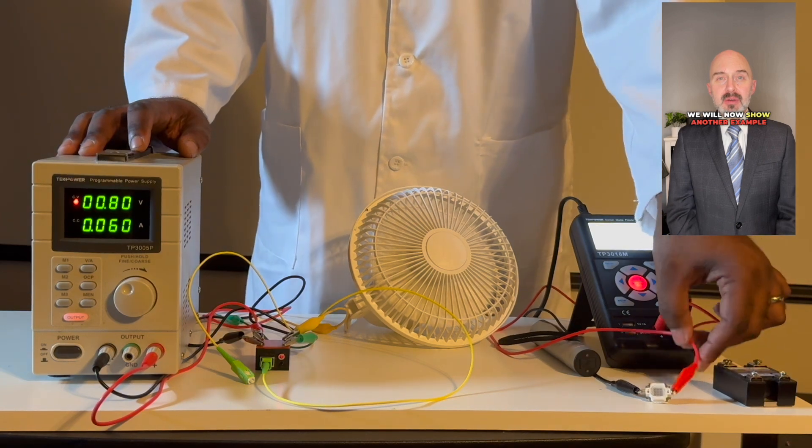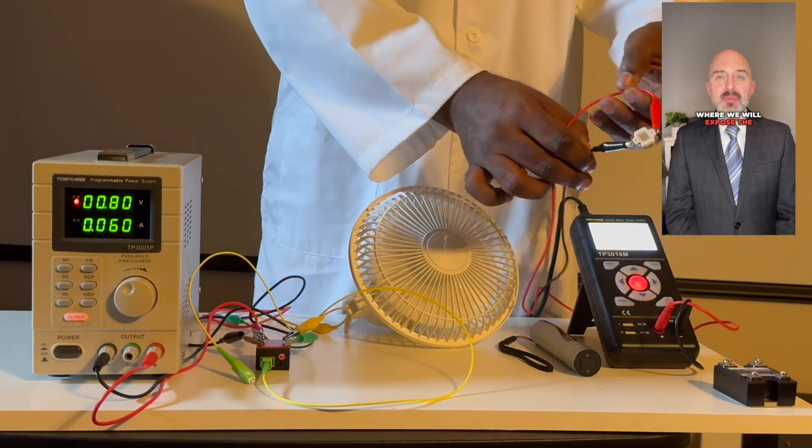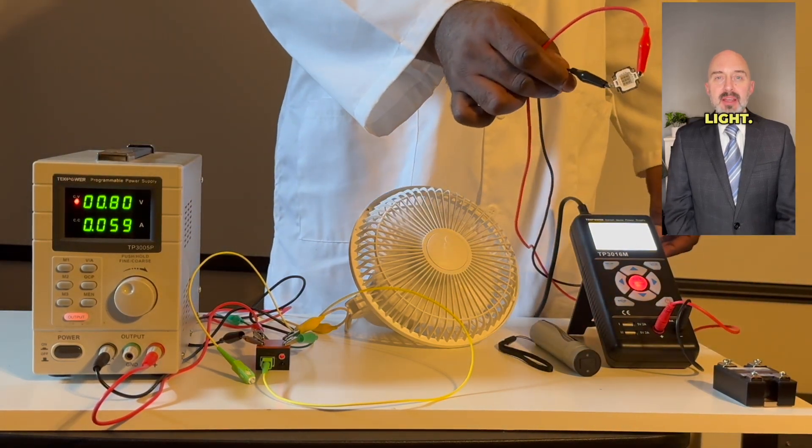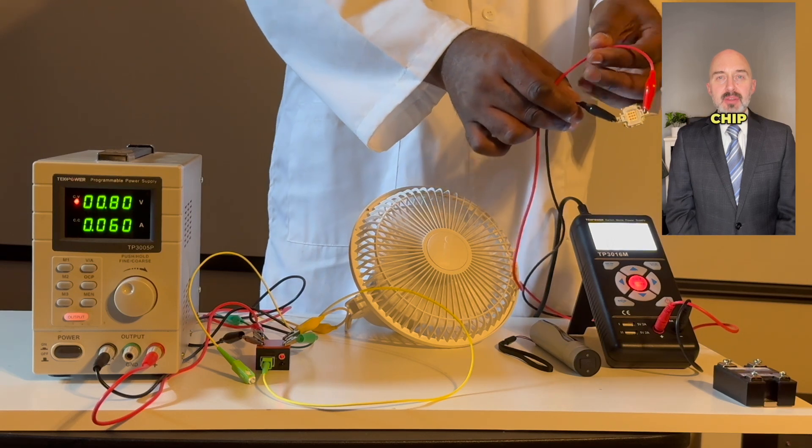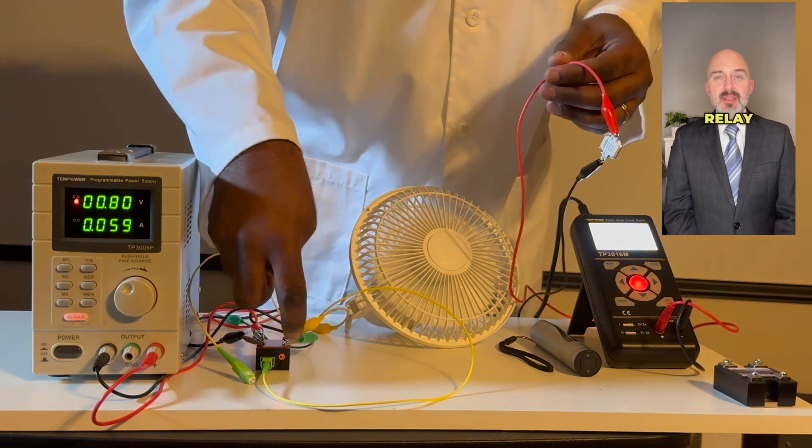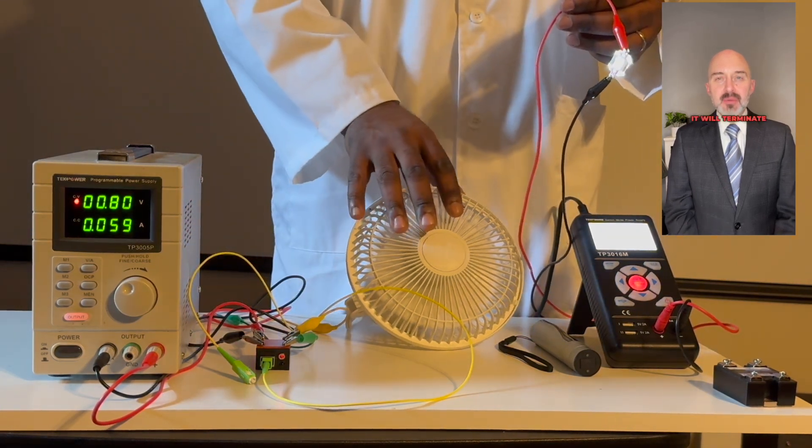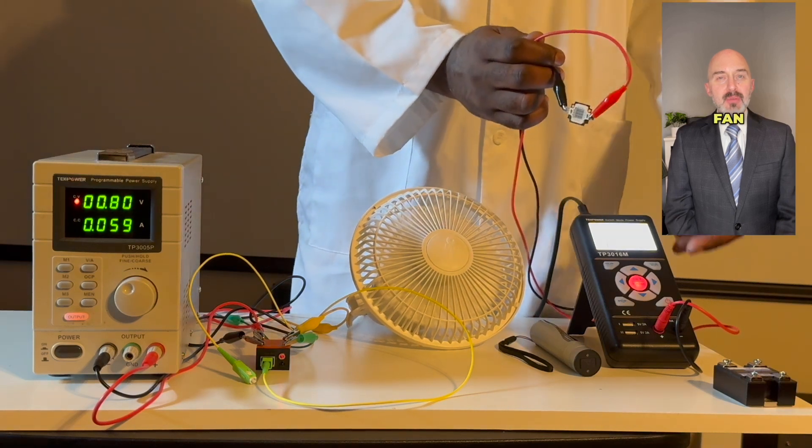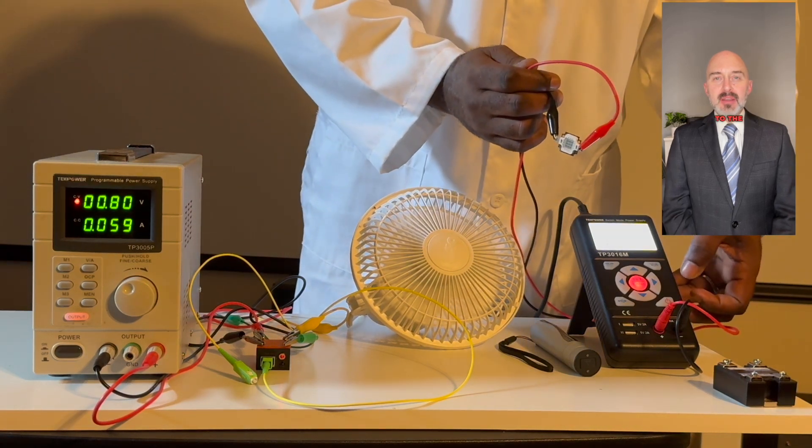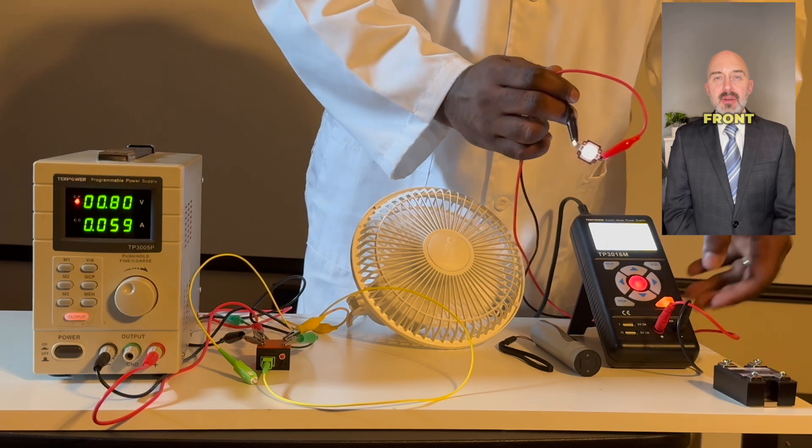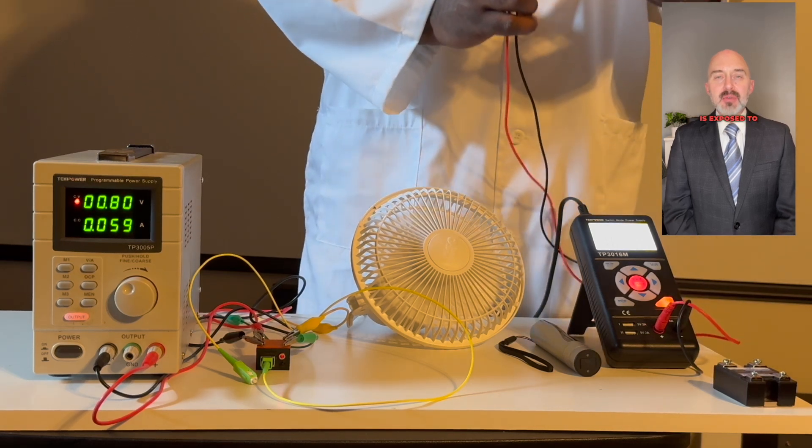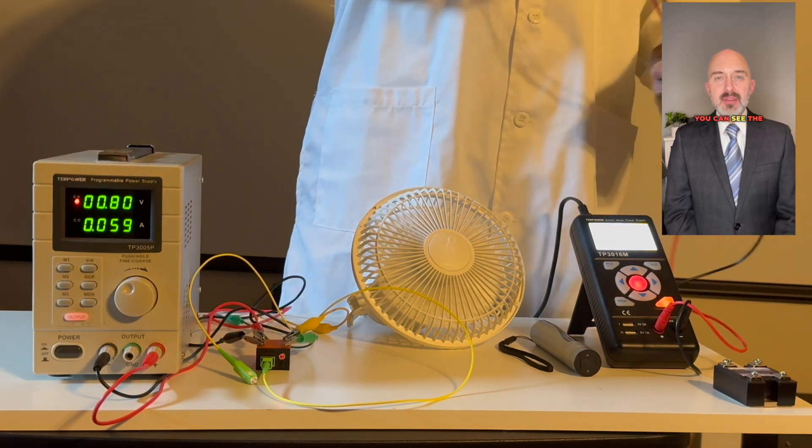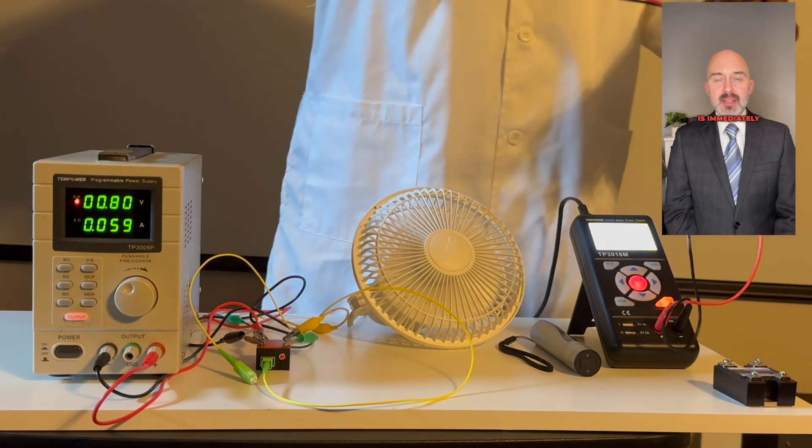We will now show another example of the tri-mode feature where we will expose the relay to infrared light. We have an infrared chip that we will power up. When the relay is exposed to infrared light, it will terminate power to the fan motor. We are now applying power to the infrared chip and placing the chip in front of the relay. As soon as the relay is exposed to infrared light, you can see the power to the fan motor is immediately terminated.